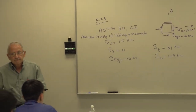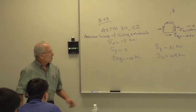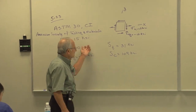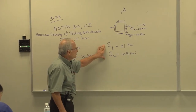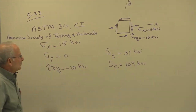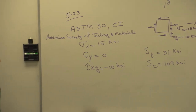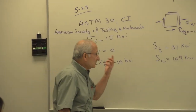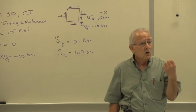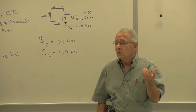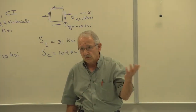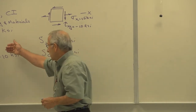Going back to the problem, we have this set of stresses and these are our strengths. We would like to come up with a factor of safety for this cast iron. To do that, we use failure theories. In failure theories we draw the two principal stresses, sigma A and sigma B. So we need to find the principal stresses.